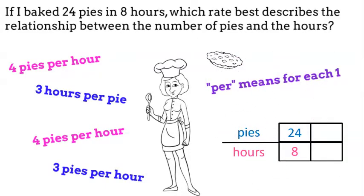Remember, per means for each one. So we need to think, 8 divided by what gives us 1? 8!